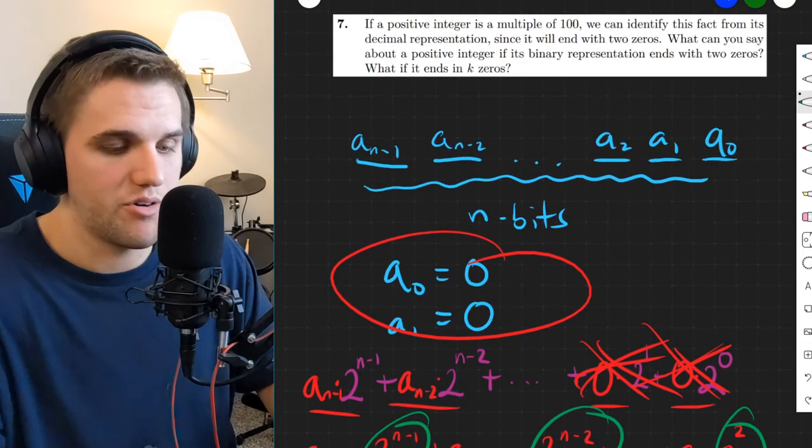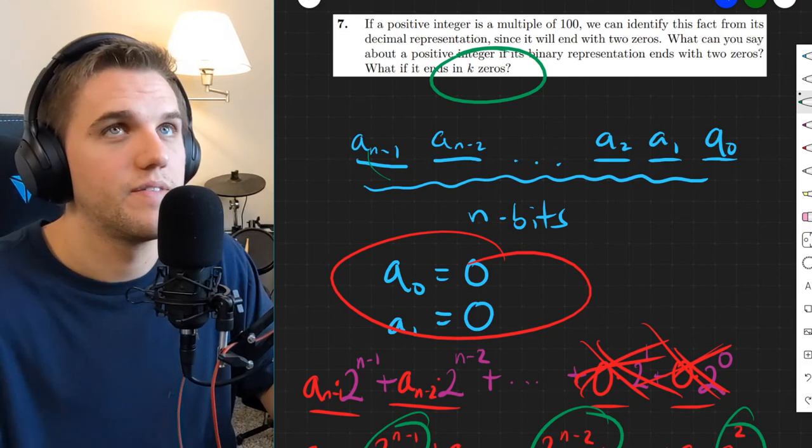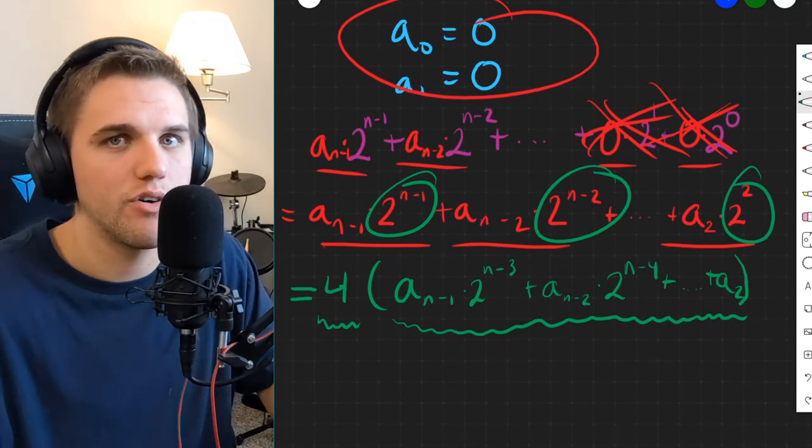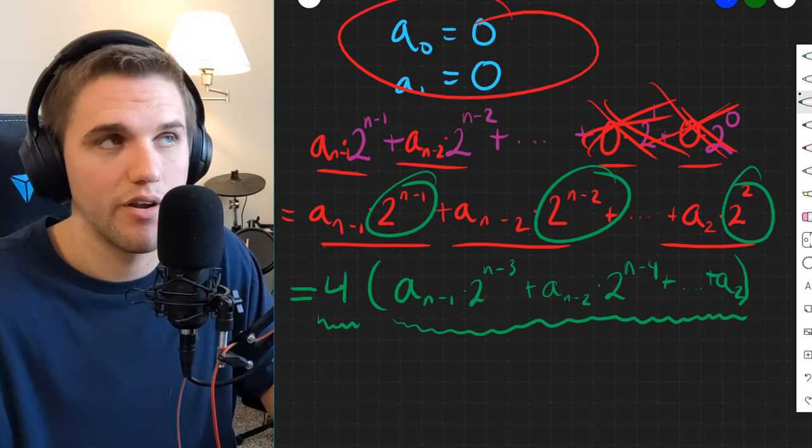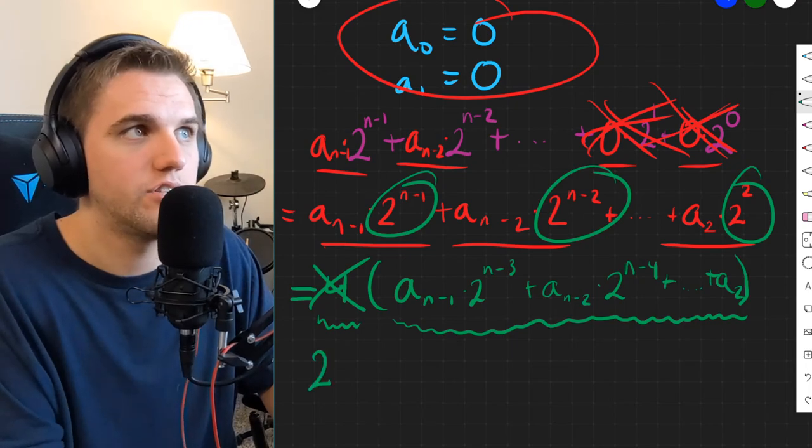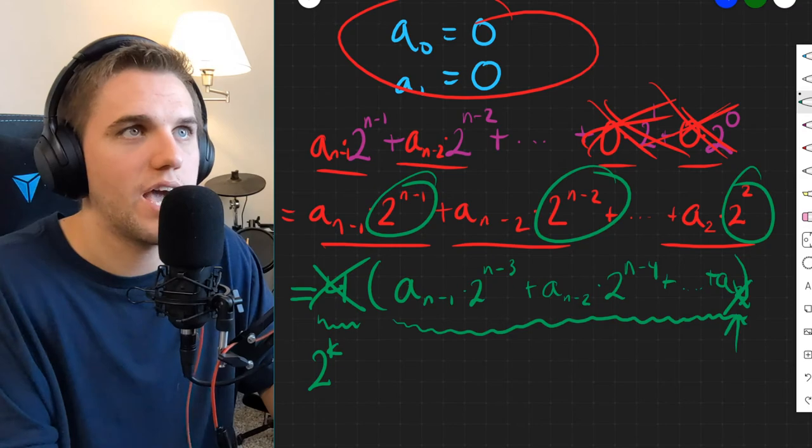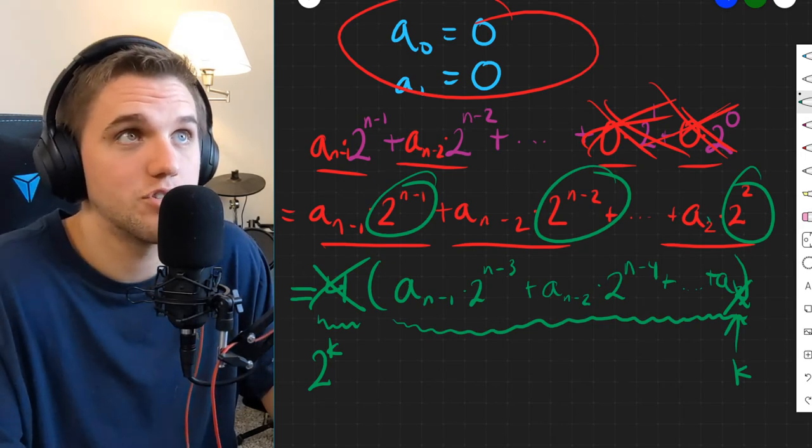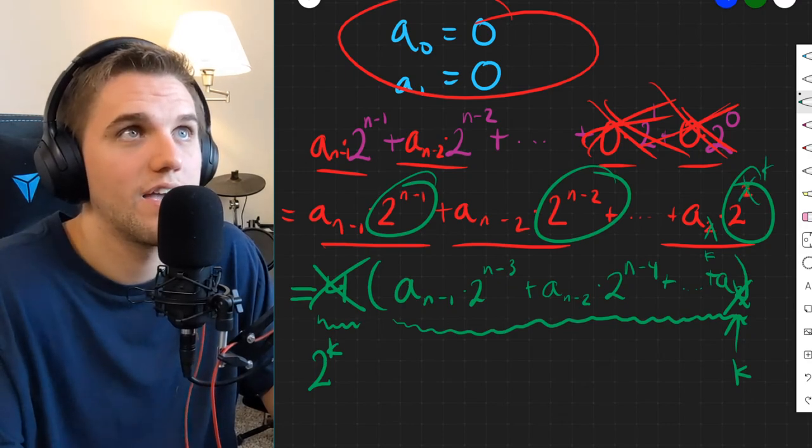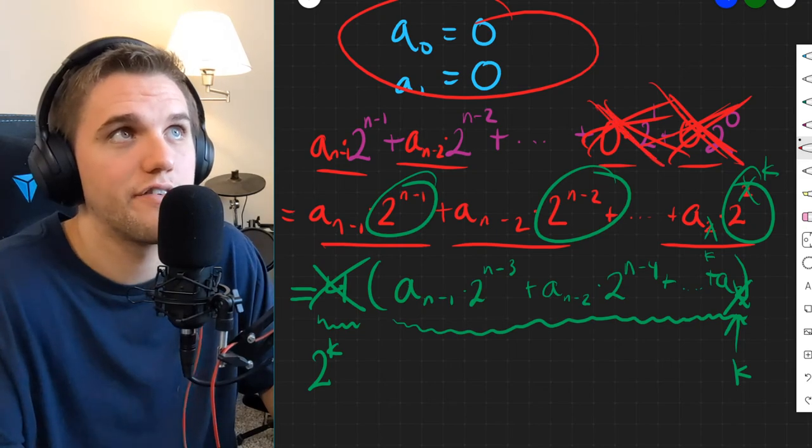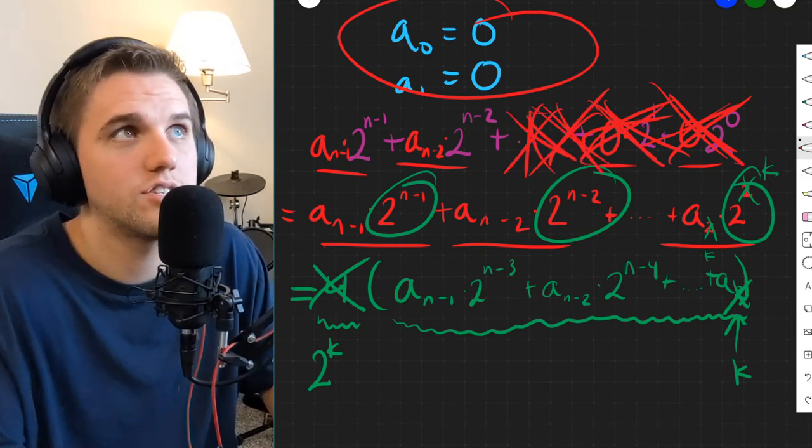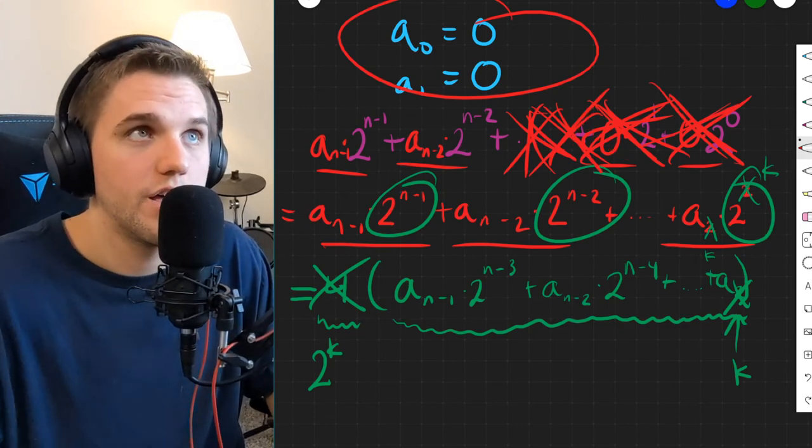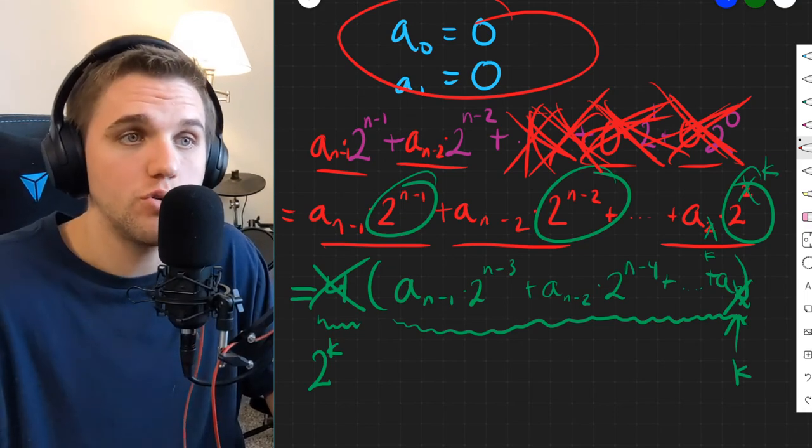But what if we end in k zeros? What about k zeros here? Well, it's going to be the same line of reasoning. Instead of factoring out 2 squared, we would factor out 2 to the kth power. So instead of a 4 here, it would be 2 to the kth power. And instead of a 2 here, this would be a k. And everything would be the same. This would be a k. This would be a k. And instead of just crossing off two terms, we would cross off k terms.